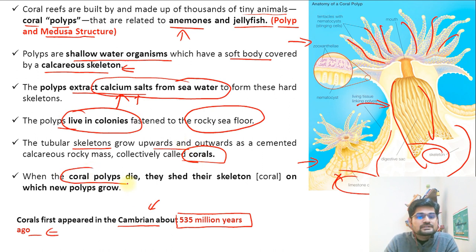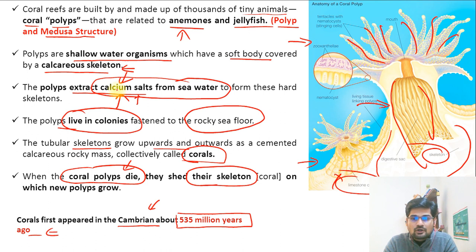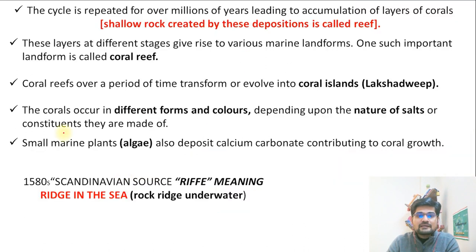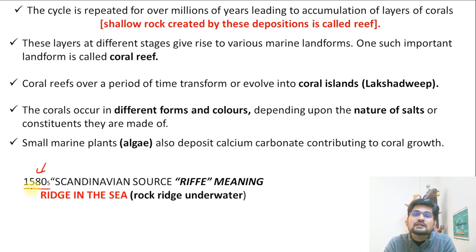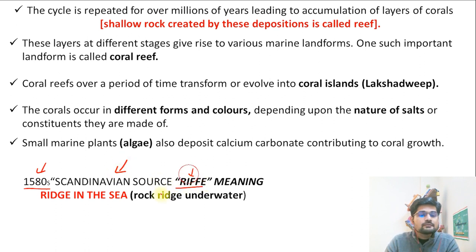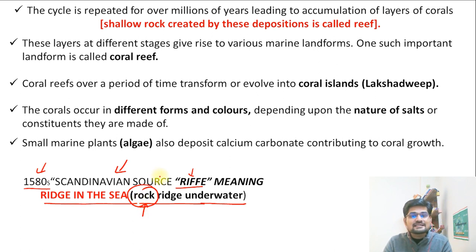When coral polyps die, they shed their skeleton — which is largely made up of calcium salt — and new polyps grow on the same skeleton; that is how their life cycle continues. The word 'reef' comes from the 16th century when the world was being navigated widely. From a Scandinavian source, the word is 'riffae,' meaning ridge in the sea — a rock ridge underwater — symbolizing a hard underwater structure.